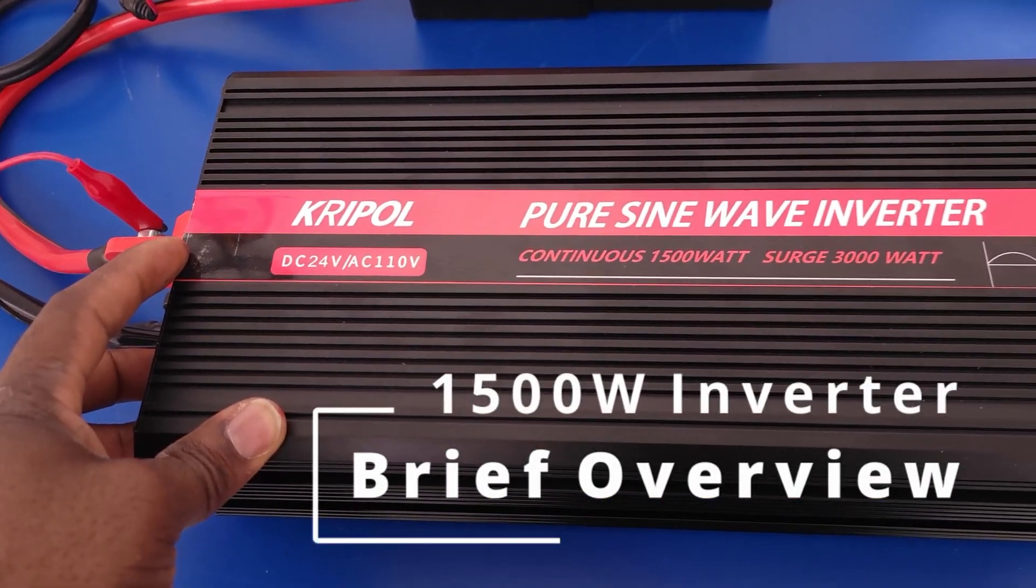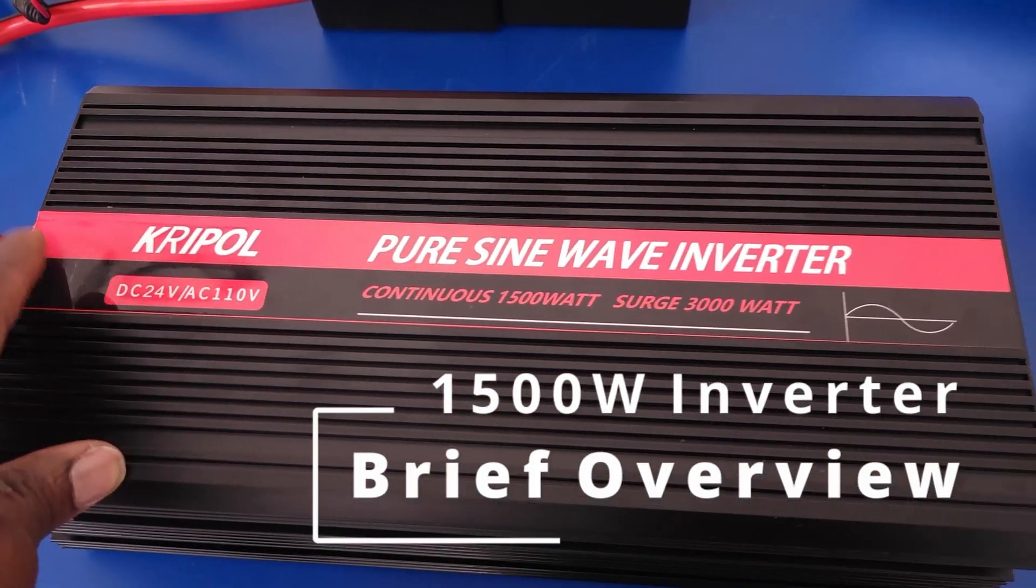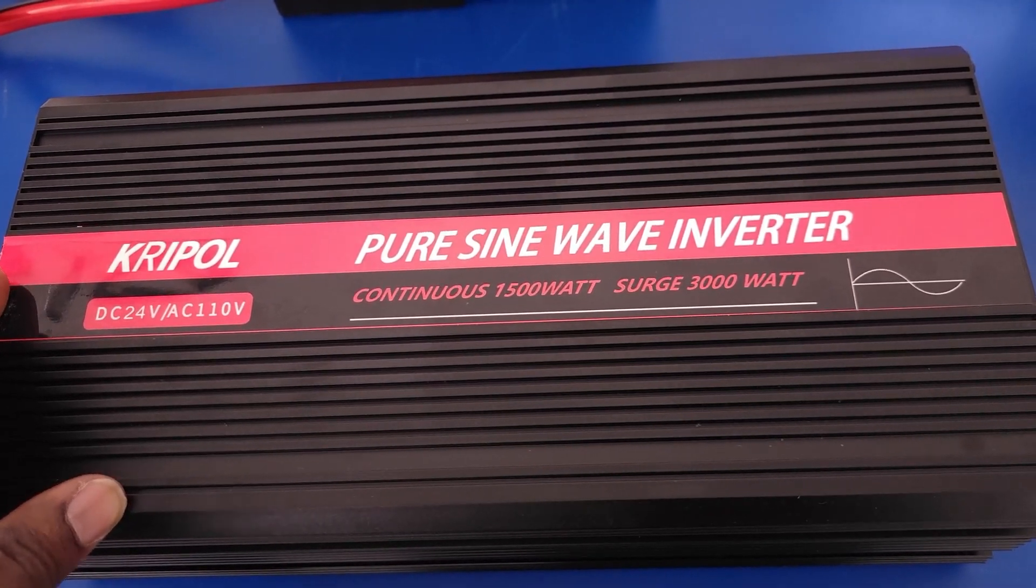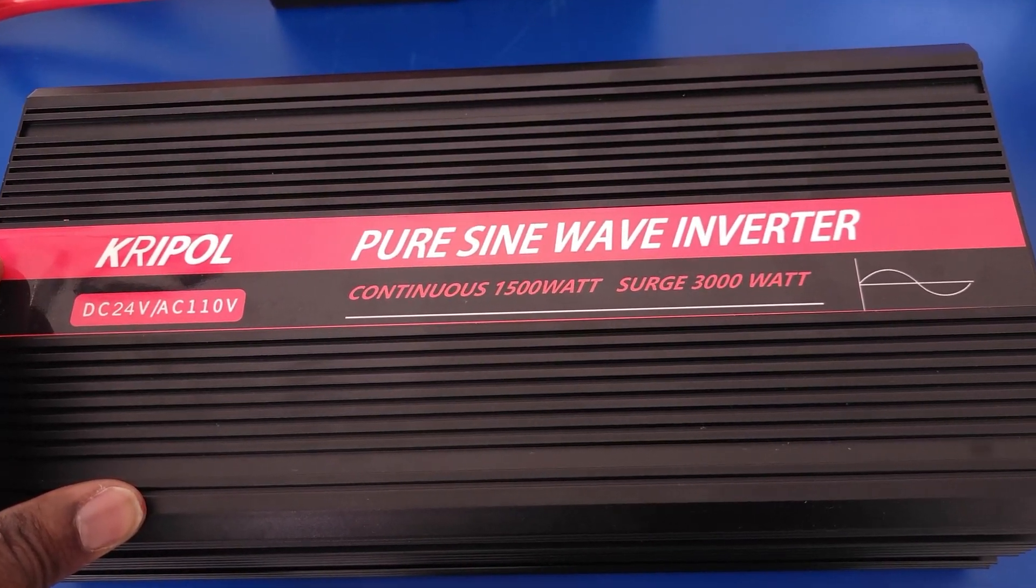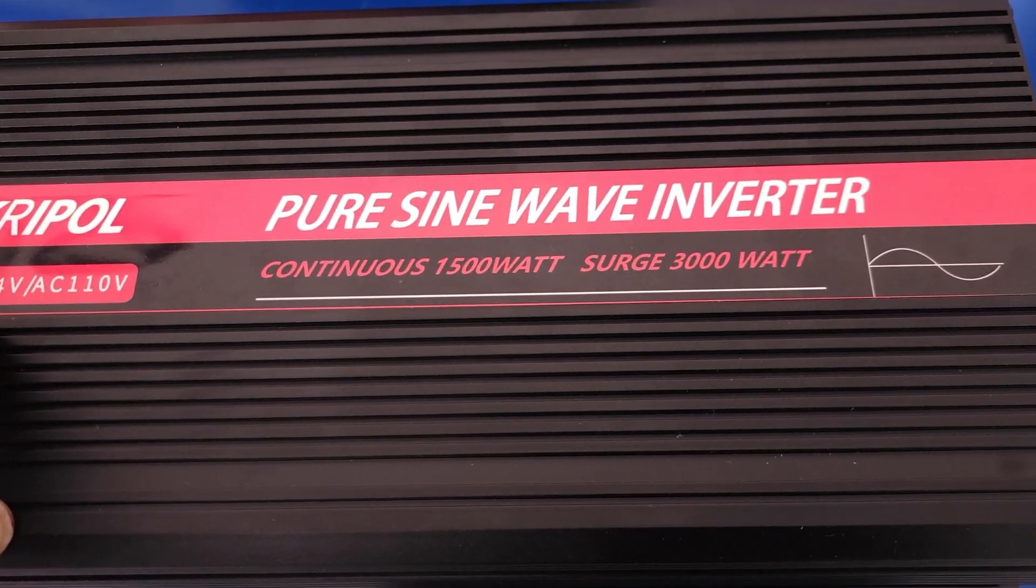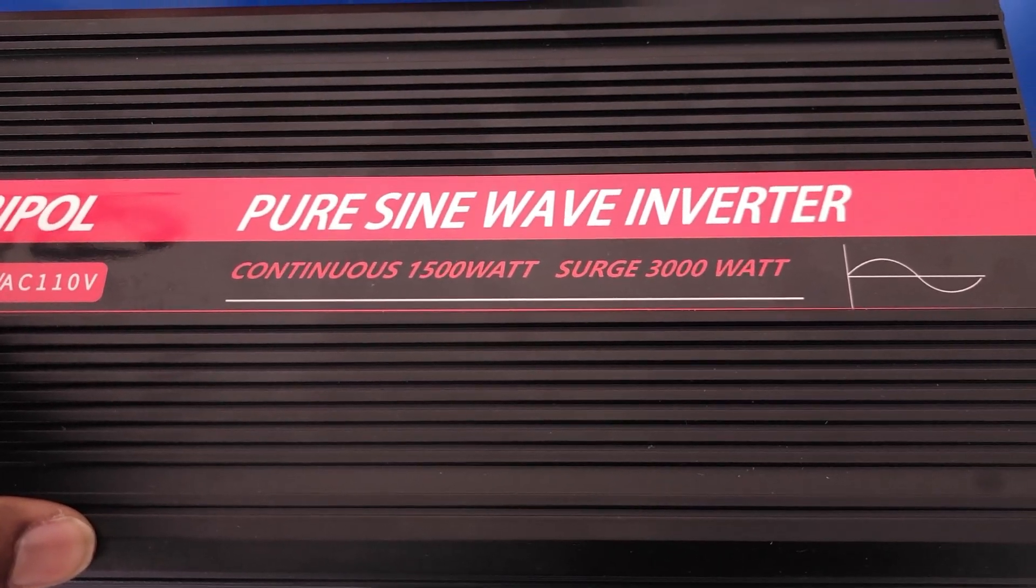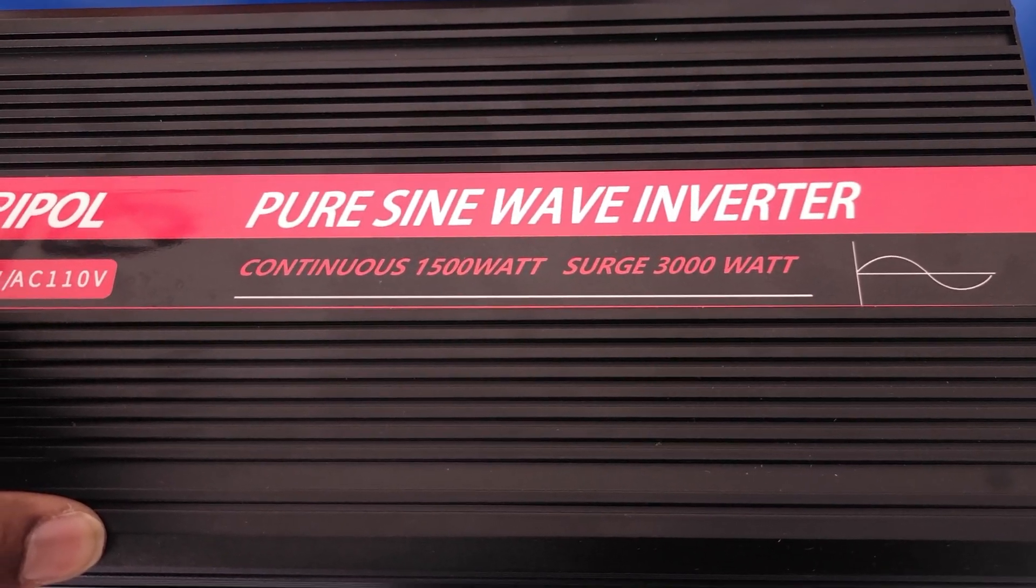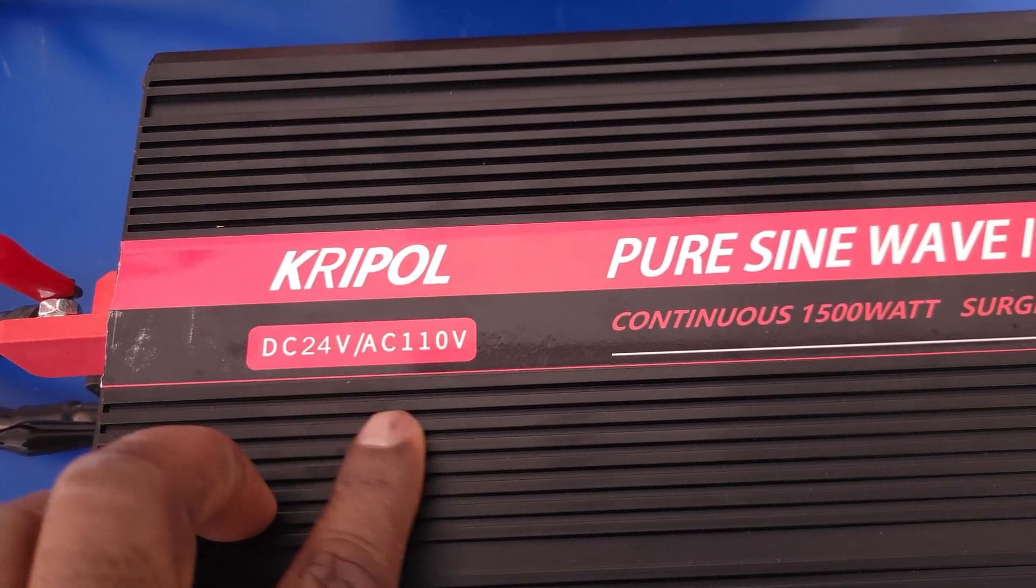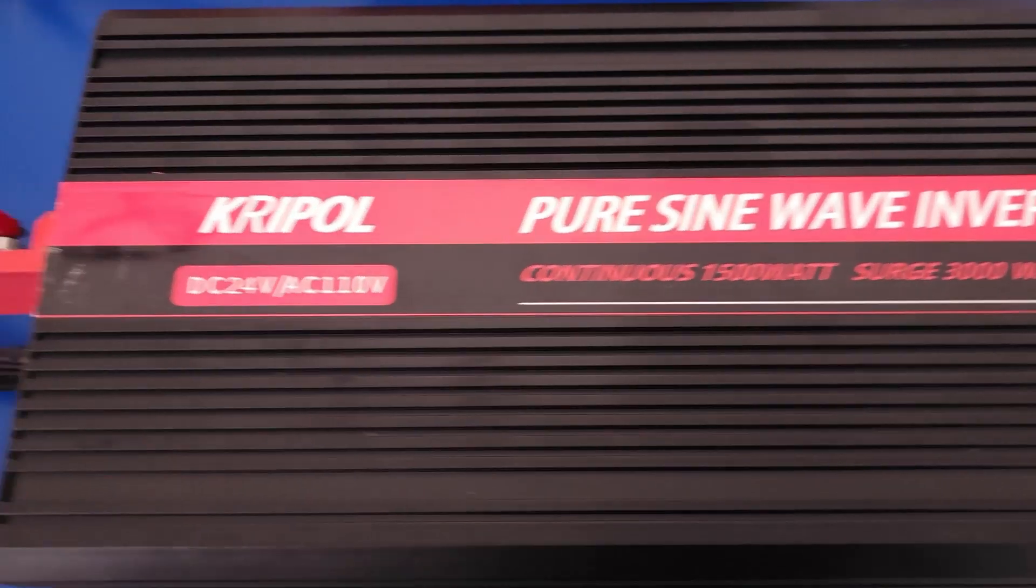This inverter was made by a company called Cripall if I'm pronouncing it correctly and it's supposed to be a pure sine wave DC to AC inverter. It's rated for continuous power delivery output of 1500 watts and a surge of 3000 watts. It takes in 24 volts DC and it's supposed to give you 110 volts AC.